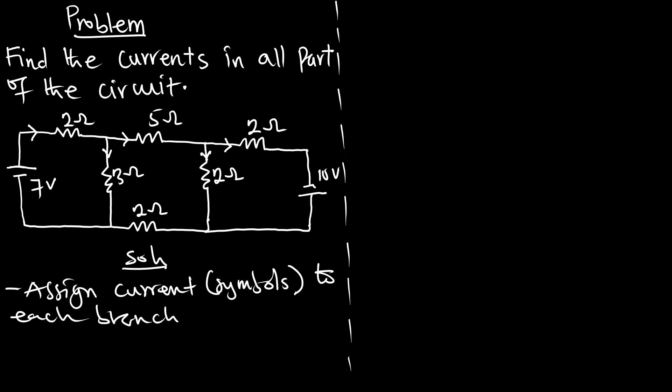The direction of the current is given in the circuit. First let's give names or symbols to the currents. I'll call this current i1. At this node, i1 is splitting into two. Once it splits, I'll call this current i2, and this current i3. We can see that i3 is the same as i1 minus i2.